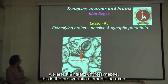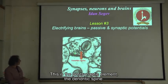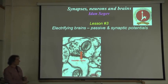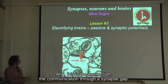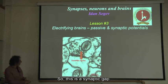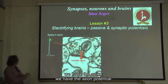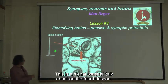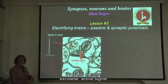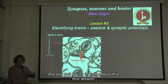Just to remind you, we are talking about the synapse. This is the pre-synaptic element, the axon. This is the post-synaptic element, the dendritic spine. And this is the connection, the communication through a synaptic gap. We already mentioned that in the axon, in the pre-synaptic part, we have the spike, the action potential. This is a signal we shall talk about in the fourth lesson. It's an all-or-none excitable active signal. We are not going to talk about that this lesson.